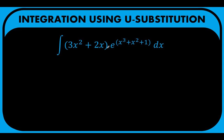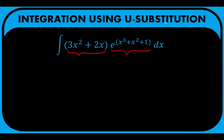In our problem we have two factors here. Now, from the given, it is clear that e raised to (x cubed plus x squared plus 1) is a composite function. The outer function is e to this exponent and the inner function is this exponent itself. So if the derivative of the inner function happens to be one of the factors here, that's exactly the right time to apply u-substitution.